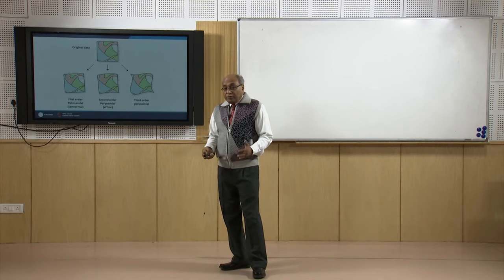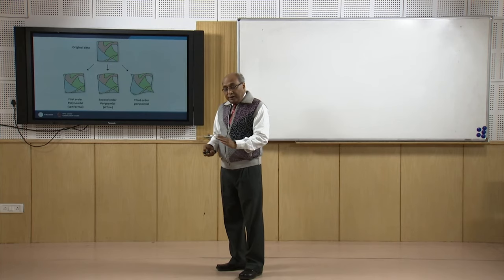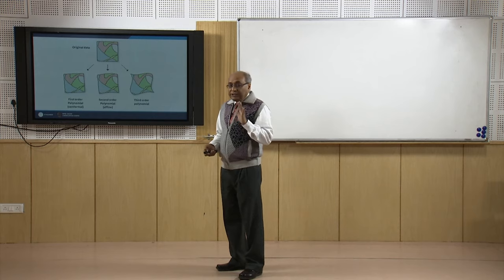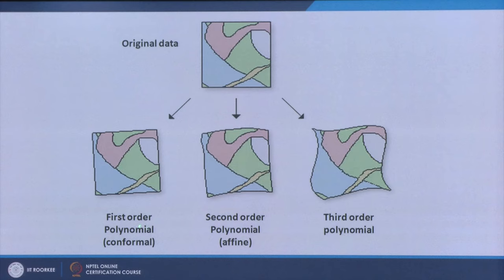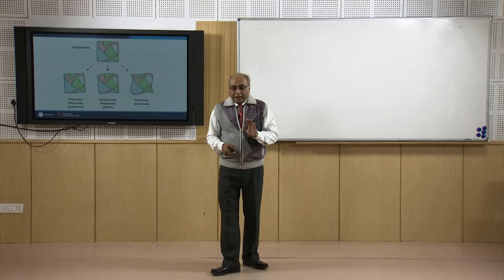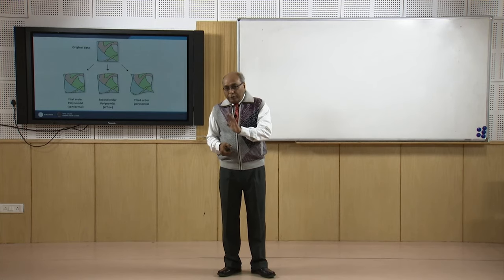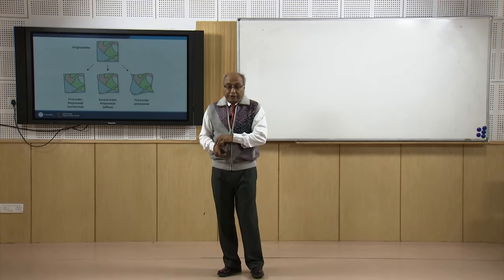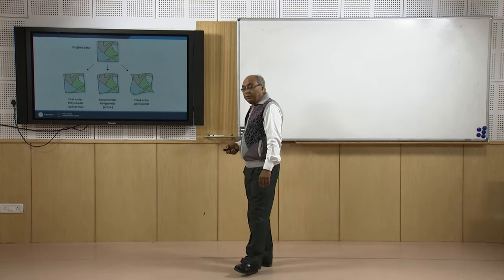For satellite images, the first-order polynomial is not sufficient because it involves not only simple transformation from geometric to geographic domain, but may also require change in scale and rotation. If that kind of requirement is there, then the second-order polynomial — also called affine transformation — is chosen. The second-order polynomial allows transformation from geometric to geographic domain, as well as scale change and rotation of the map so that north is completely upward.